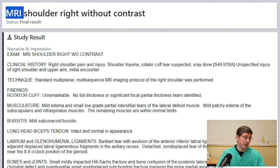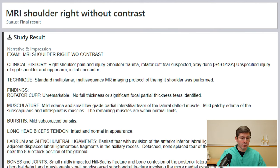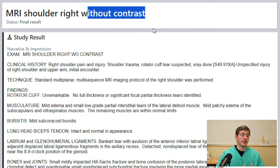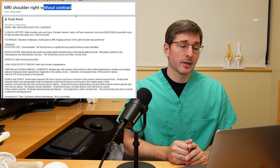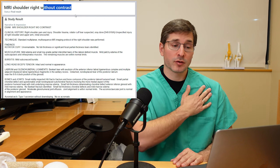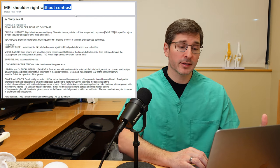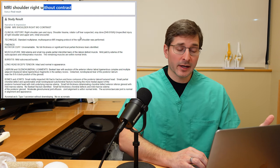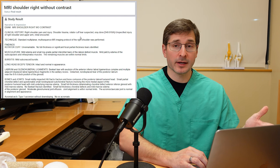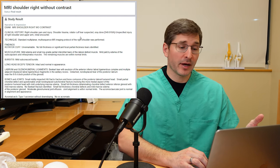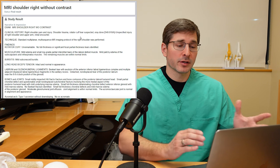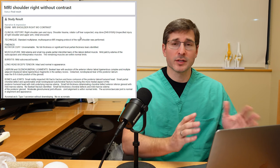So in this first MRI report, we're going to start from the top and work our way down. At the very top we see MRI of the right shoulder, done without contrast. They're referring to something called gadolinium, which can be injected into the shoulder joint — that would be an MRI with contrast. This particular one does not have contrast, but in certain cases adding contrast can help show different types of pathology more clearly. That is usually just injury or situation specific.